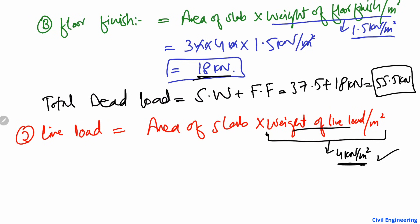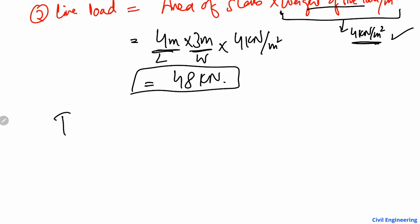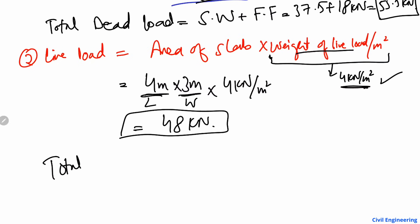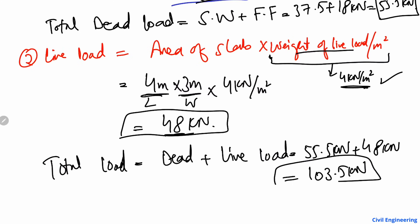I am using 4 kilonewton per square meter as a general value. Multiplying the area of the slab — 4 meters by 3 meters — by the live load of 4 kilonewton per square meter gives a live load of 48 kilonewton. The total load is equal to the dead load plus live load: 55.5 kilonewton plus 48 kilonewton equals 103.5 kilonewton.